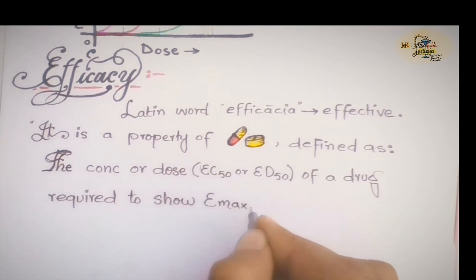In the above definition, EC means effective concentration and ED means effective dose. EC50 or ED50 means it is the amount of drug required to show response in 50% of population.